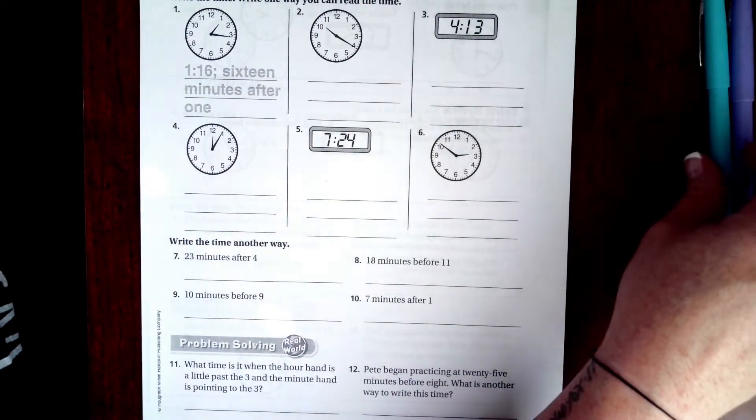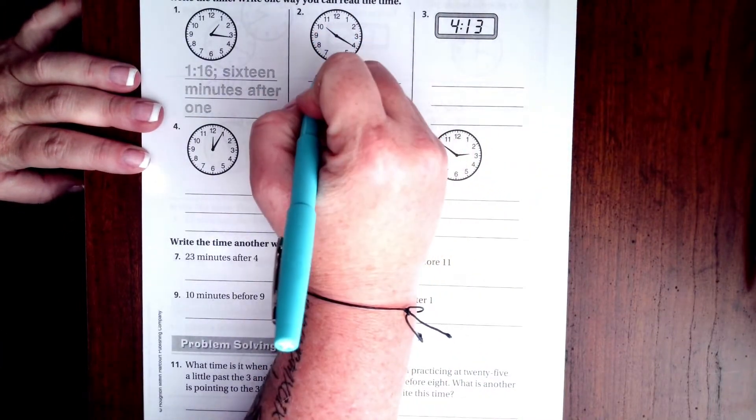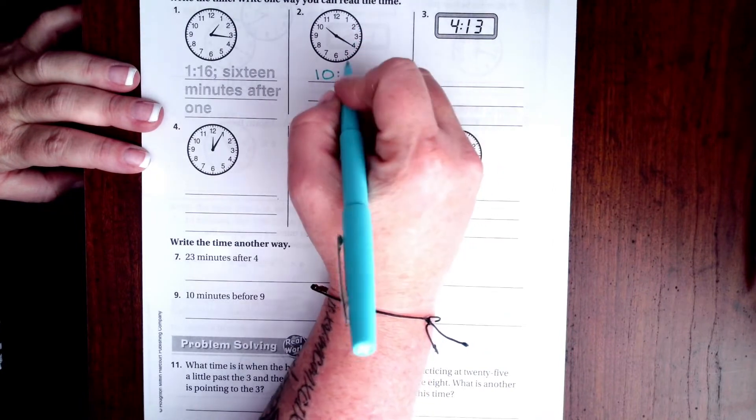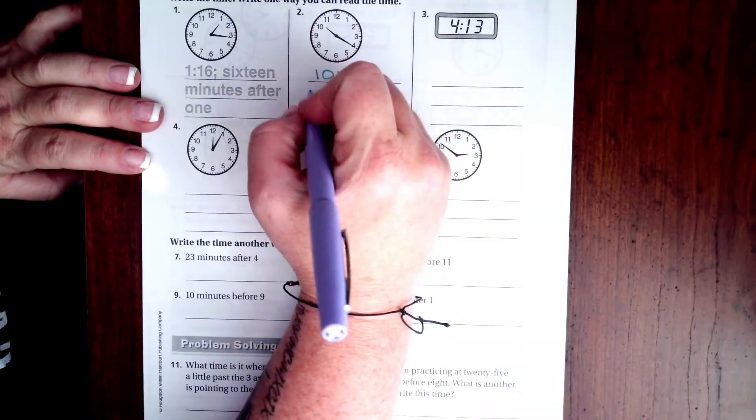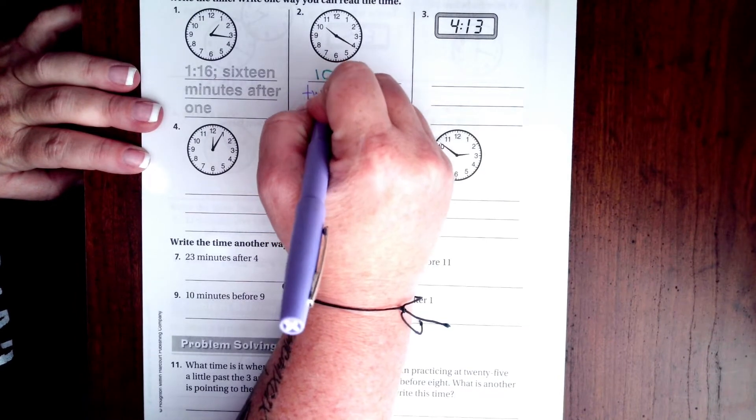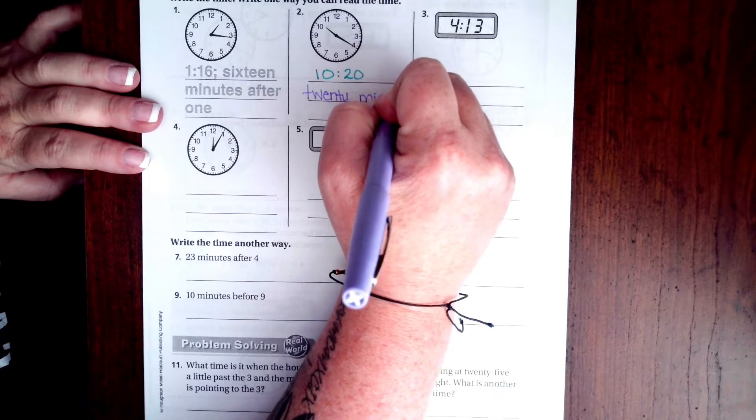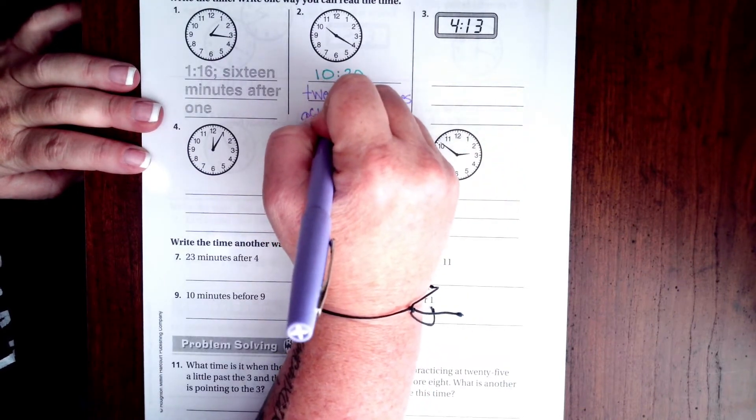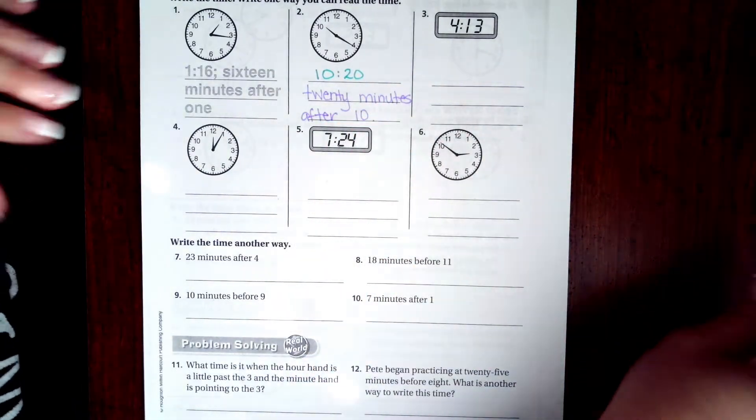We would read this as the short hand says 10, and then we have 5, 10, 15, and 20. The other way that we could say that is 20 minutes after 10.